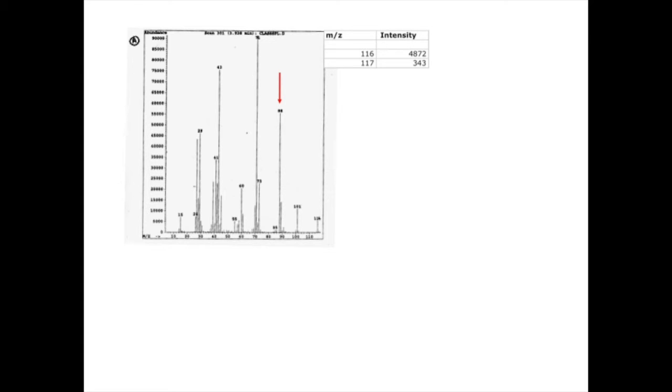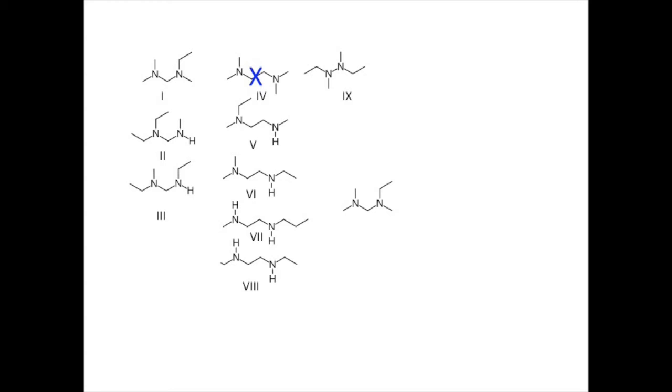The peak at 88 atomic mass units is very strong. It represents the loss of 28 from the molecular ion. The only way that we could do that with a combination of atoms that are in this formula is by losing ethylene or a molecular nitrogen molecule. Losing N2 might be tricky since these atoms are not adjacent to each other in any of our structures. Even if they were adjacent, as in a hydrazine molecule, we would need to break at least four bonds in order to lose molecular nitrogen.